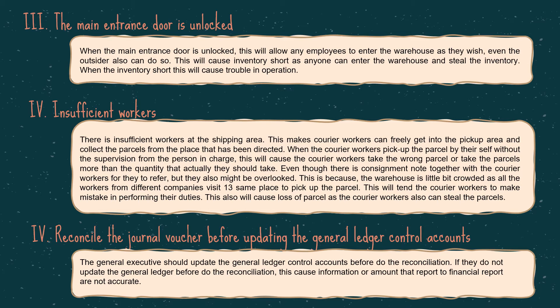The last weakness is reconciling the general voucher before updating the general ledger control accounts. The general ledger executives should update the general ledger control accounts before performing the reconciliation. If they do not update the general ledger before reconciliation, this will cause the information or amounts reported in the financial report to be inaccurate.